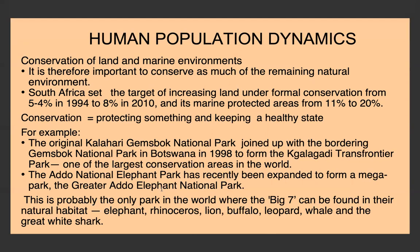Examples of conservation include the Kgalagadi Transfrontier Park, formed by joining South Africa's Kalahari Gemsbok National Park with Botswana's Gemsbok National Park — one of the largest conservation areas in the world. The Greater Addo Elephant National Park was expanded into a mega park and is probably the only park in the world where you can see the Big Seven: the Big Five (elephant, rhino, lion, buffalo, leopard) plus whale and great white shark. This helps both conservation and tourism, boosting the economy.